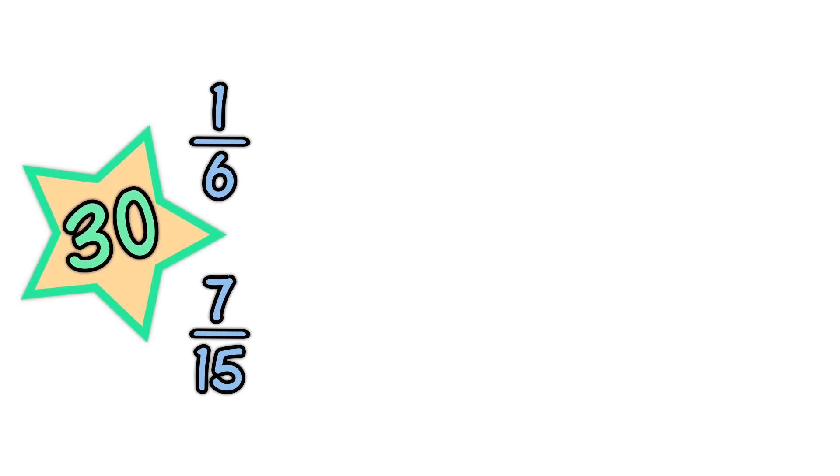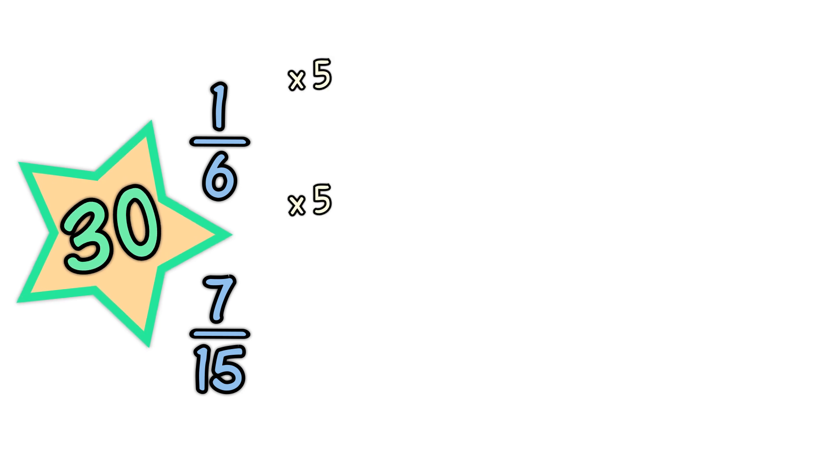Now let's try to make the denominators the same. Note, what you do to the bottom of the fraction, you must also do to the top. When you multiply six by five, you get thirty. And when you multiply fifteen by two, you also get thirty.